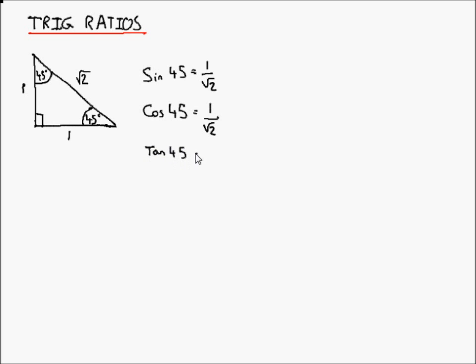And then tan of 45 equals opposite over adjacent, which is 1 over 1, which equals 1. These are used in exam situations when a question uses the sine or cosine rule with one of these angles and asks for the answer in exact form.